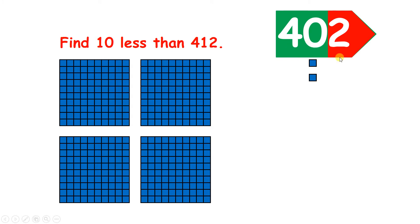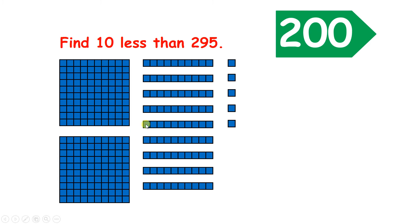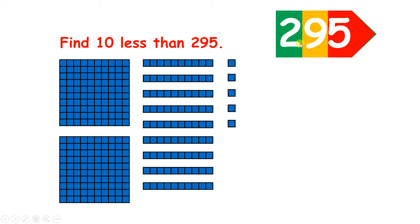Now we have two hundreds, nine tens, and five units, so we have the number two hundred and ninety-five. So what is ten less than two hundred and ninety-five? If we subtract ten, we now have eight tens, so we have two hundred and eighty-five.